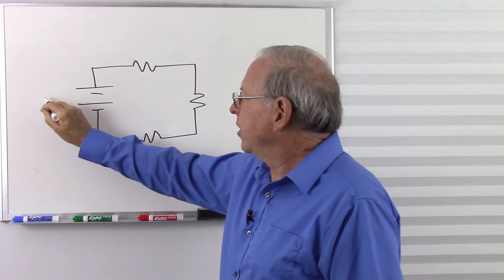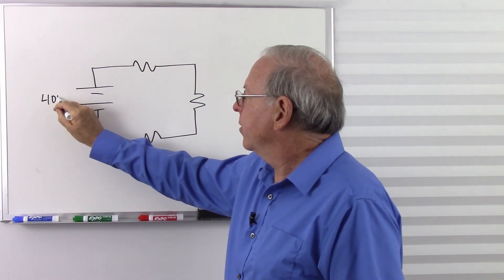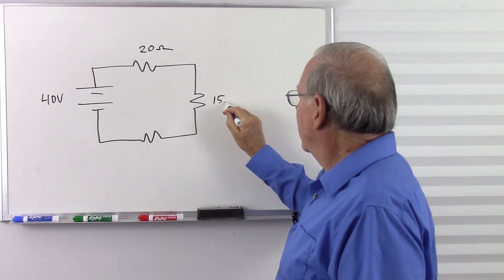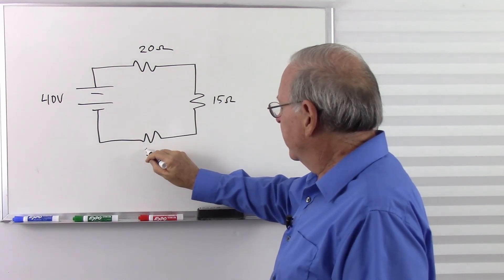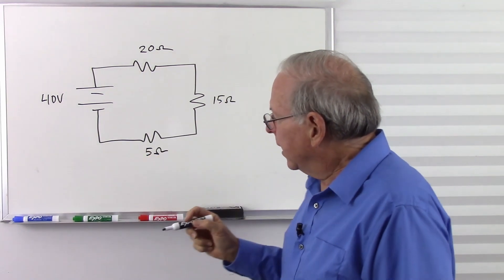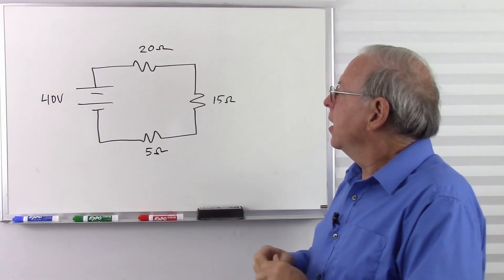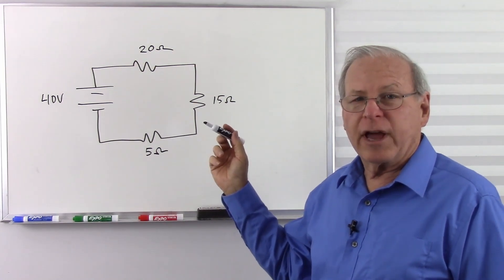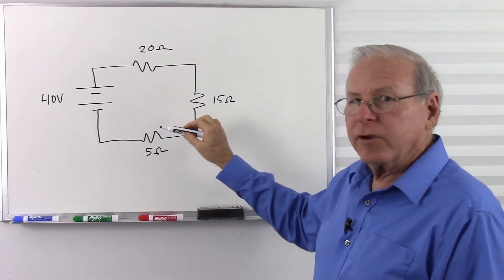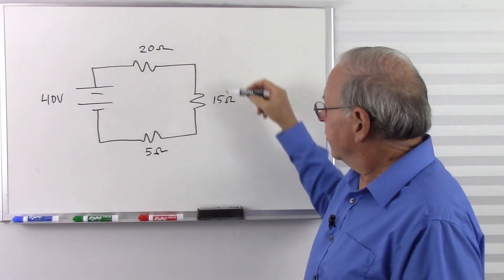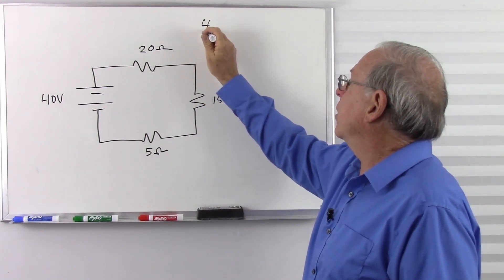Just to make the numbers easy, let's make this 40 volts, make this 20 ohms, make this 15 ohms, and make this 5 ohms. Let's take a look at the voltages across this circuit for a moment. First of all, how much resistance do I have in the whole circuit? I have my series resistors. They're all in series, and we simply add those together.